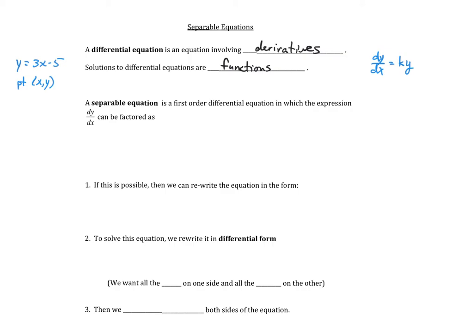A first-order differential equation in which the expression dy/dx can be factored as follows: we're going to be able to write our differential equation as dy/dx equal to g(x) times f(y). That's why we call it a separable equation — because our derivative dy/dx can be separated into a function of x times a function of y.